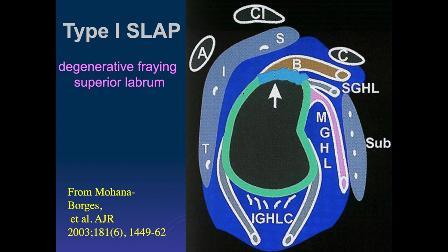These diagrams come from a paper out of UCSD published in AJR. A Type 1 SLAP tear, as defined by Steve Snyder, is degeneration or fraying of the superior labrum with the biceps anchor still intact — there's fibrillation in this area. When I dictate these, I call it degenerative disease of the superior labrum. Most orthopedic surgeons know the SLAP terminology.